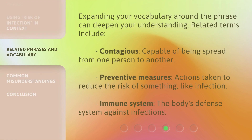Expanding your vocabulary around the phrase can deepen your understanding. Related terms include: contagious — capable of being spread from one person to another; preventive measures — actions taken to reduce the risk of something, like infection; and immune system — the body's defense system against infections.